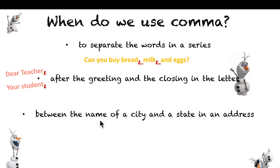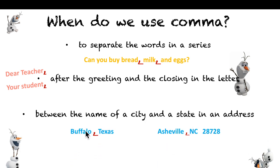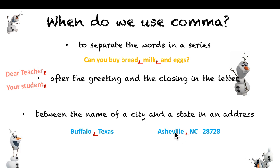You use the comma between the name of the city and the state in an address. Like here: Buffalo, Texas. It's a city and a state. Between the city and the state, you will put the comma. For example: Asheville, North Carolina, 28728. This is a city, this is a state, and this is a zip code. The comma goes between the city and the state.